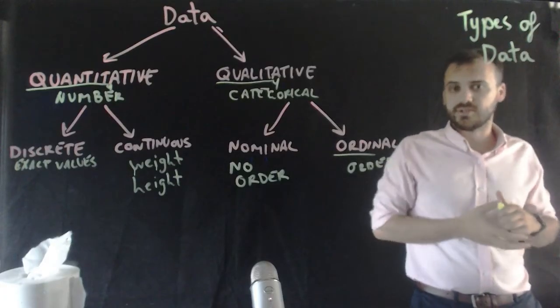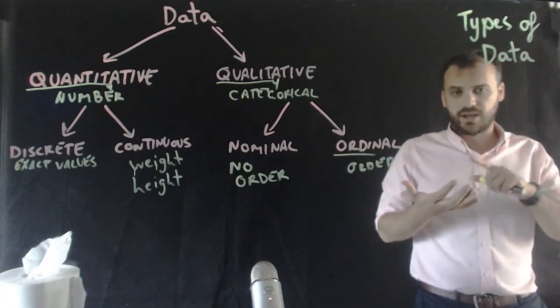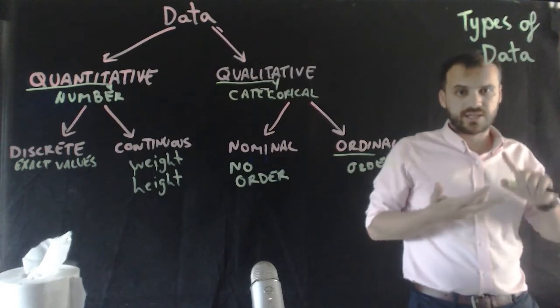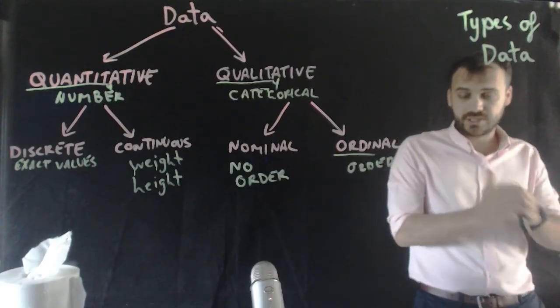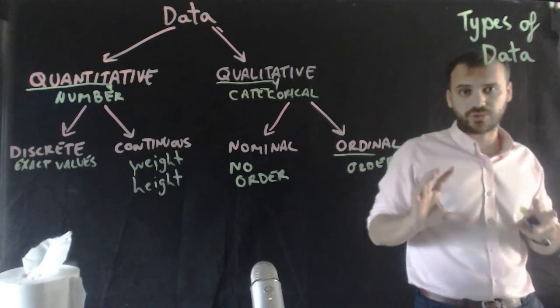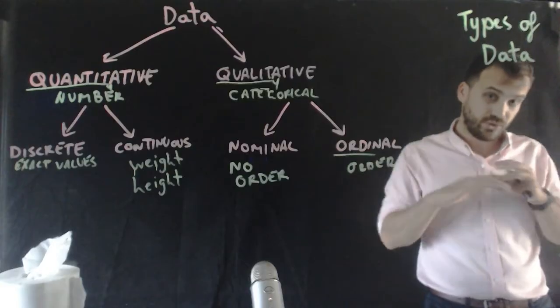And when you get your grades at the end of the semester, you might get a VLA, an LA, a sound, a HA, or a VHA. Now, again, these are categories, but they're also ordinal categories. They're categories with an order.